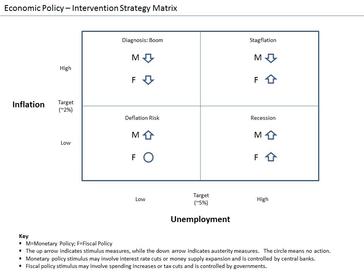National output is the total amount of everything a country produces in a given period of time. Everything that is produced and sold generates an equal amount of income. The total output of the economy is measured by GDP per person. Output can be measured from the production side as the total value of final goods and services or the sum of all value added in the economy. Macroeconomic output is usually measured by gross domestic product or one of the other national accounts.